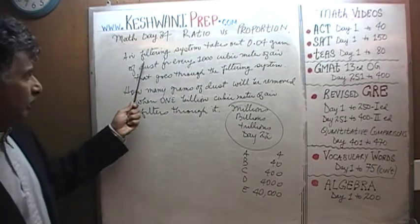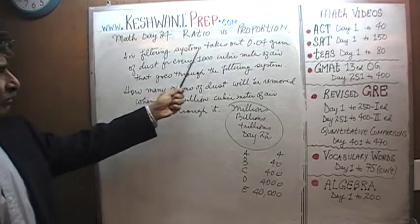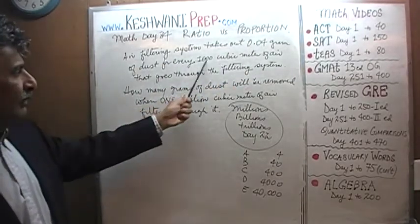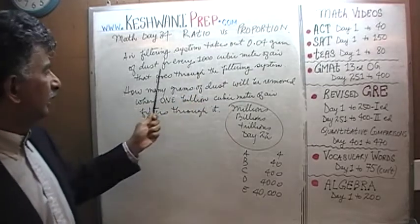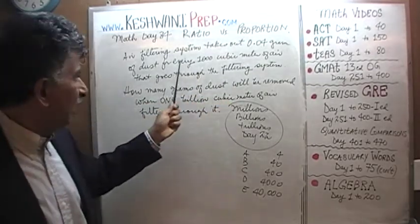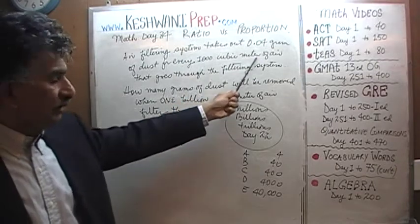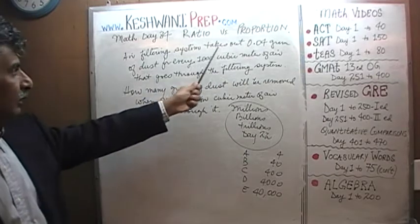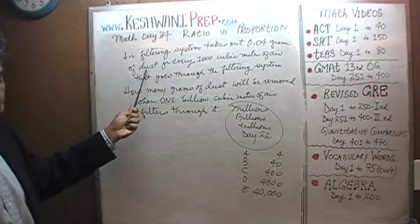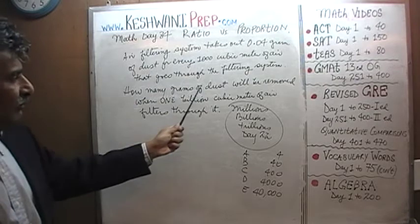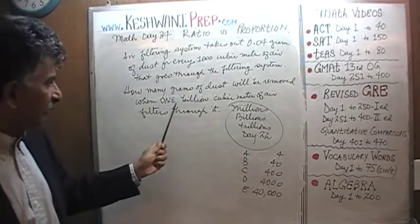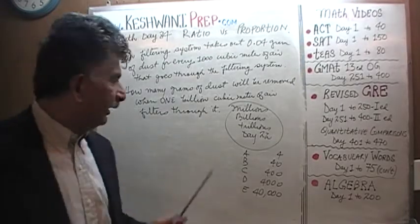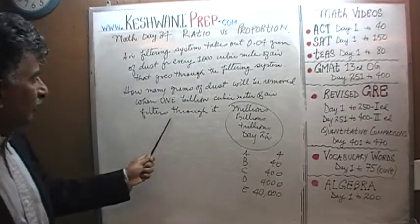Here is the problem. We are told that the air filtering system takes out 0.04 grams of dust for every 1,000 cubic meters of air that goes through the filtering system. The question is, how many grams of dust will be removed if 1,000,000,000 cubic meters of air has filtered through it?